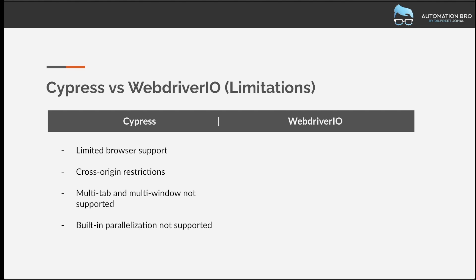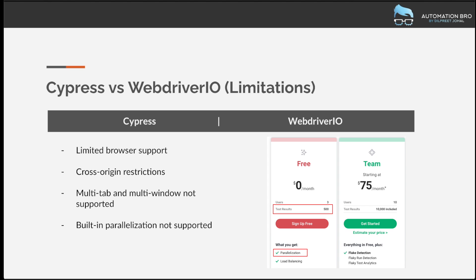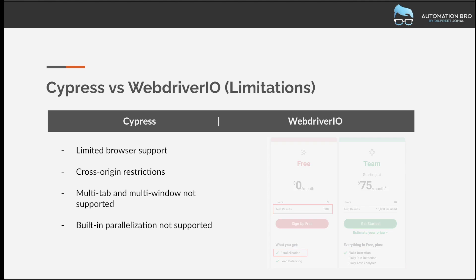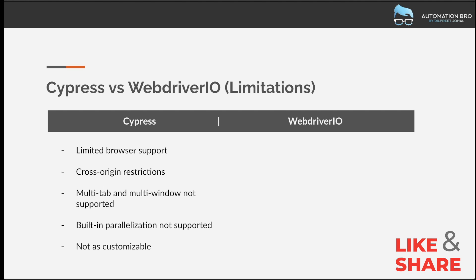Cypress also does not have built-in parallelization. You can run tests in parallel across multiple browser instances, but only through the Cypress Dashboard, which is a paid feature. They do have a free tier — around 500 test results — but for a large organization that's not going to be enough. You'll need a paid plan to take full advantage of parallelization. Finally, Cypress is generally not as customizable as WebDriver.io, even considering plugins, particularly when setting up your framework or adding services.